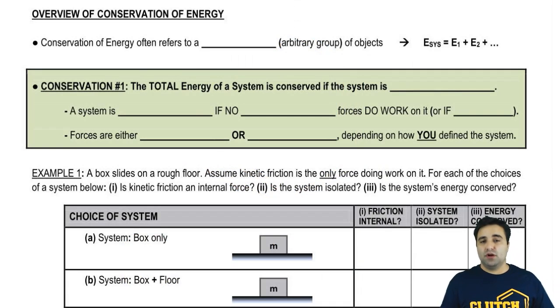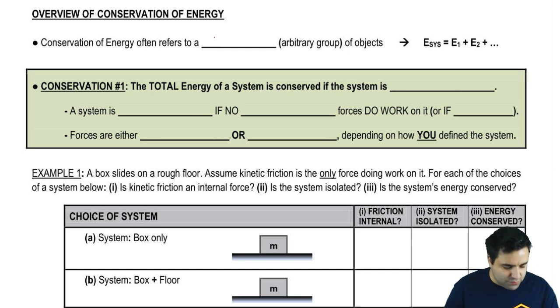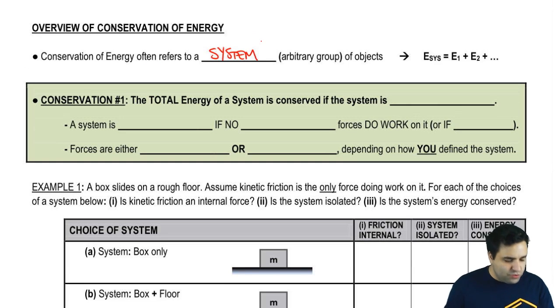So in this video, I'm going to talk about the two rules for conservation of energy, and you should understand these at a conceptual level. Both rules have to do with the idea of a system. So conservation of energy often refers to a system of objects. Now, a system of objects is just an arbitrary group of objects. Arbitrary means that you make it up. You determine what the system is.